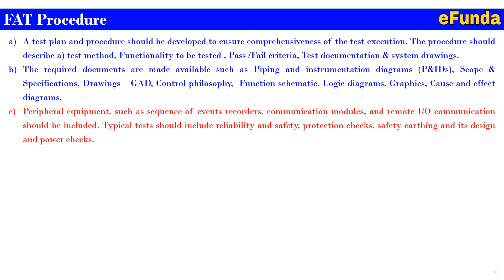Peripheral equipment such as sequence of event recorders, communication modules and I/O remote communication should be included. Mainly, the hardware manufacturer conducts a functional test of the equipment in accordance with quality procedures or the control plan. Typically, tests should include reliability and safety, protection check, and safety interlock design and power check.